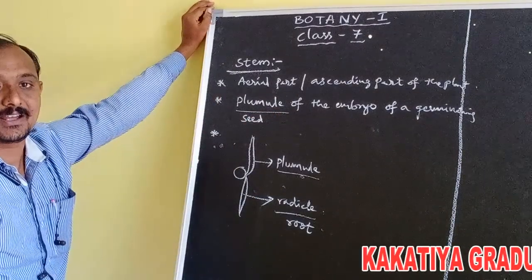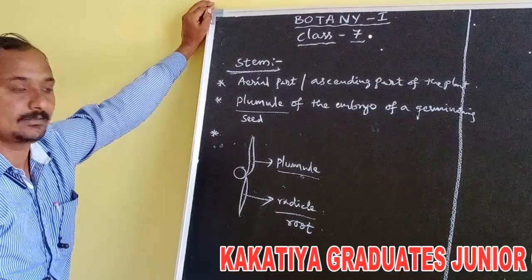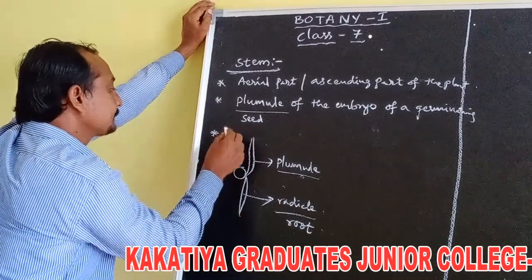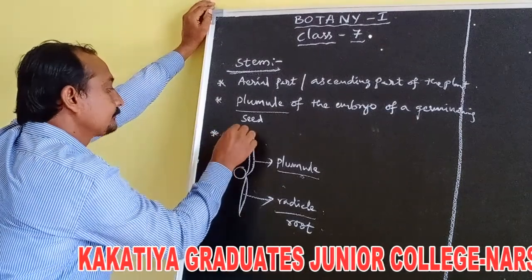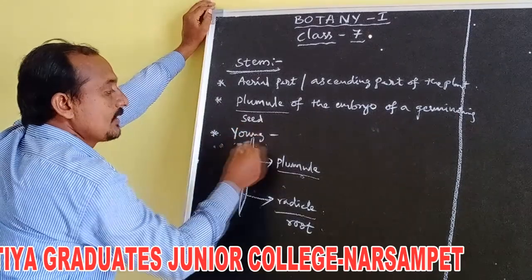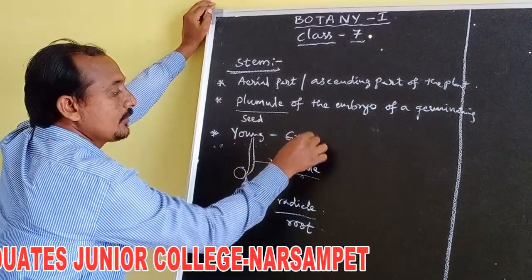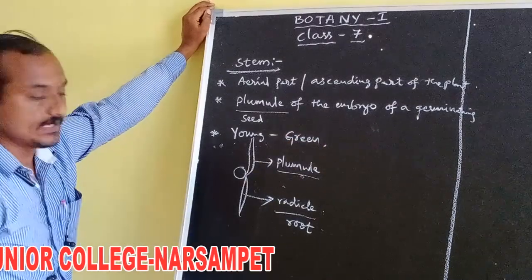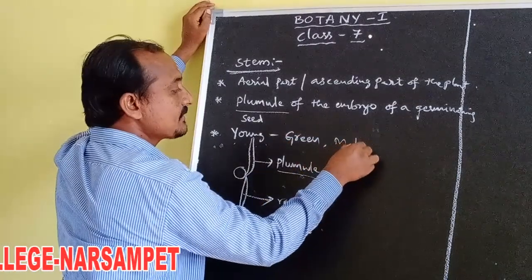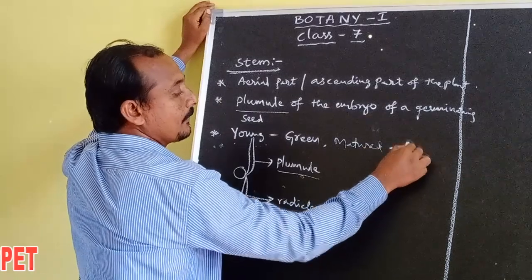Young stems are green in colour but matured stems are brown in colour, dark brown. Stems are green in colour due to the presence of chlorophyll pigments, but matured stems are dark brown in colour.